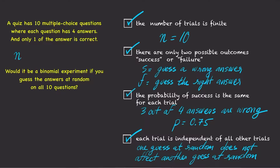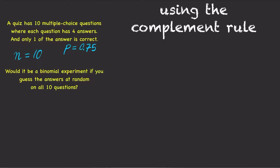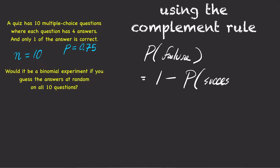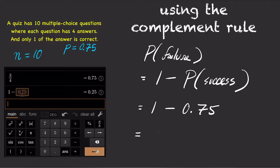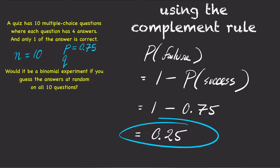The number of trials is n equals 10. The probability of success is p equals 0.75. And using the complement rule, the probability of failure is 1 minus the probability of success, which is 1 minus 0.75, so the probability of failure is q equals 0.25.